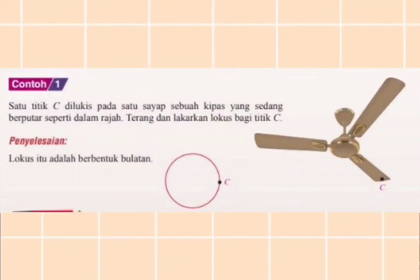Contoh satu: Satu titik C dilukis pada satu sayap sebuah kipas yang sedang berputar, seperti dalam rajah. Terang dalam konteks Locus bagi titik C. Titik C berada di hujung satu bilah kipas. Bila kipas tu berpusing, dia akan menghasilkan bulatan.